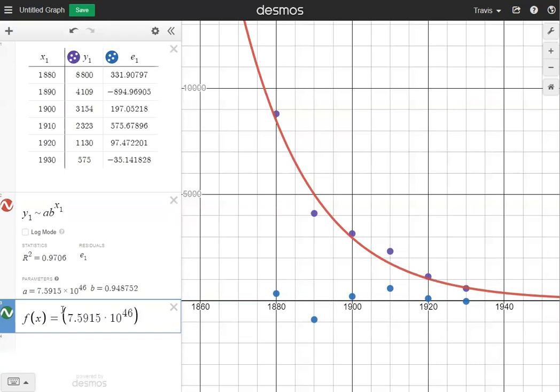Next, I'm going to use my b value. I'm also going to put that in parentheses. My b value is 0.948752, and I'm going to close that up and raise it to the x power. That's going to create my green exponential curve that you see right here. The green curve should match up with the red curve because we're using the exact same numbers that they give us at the bottom.